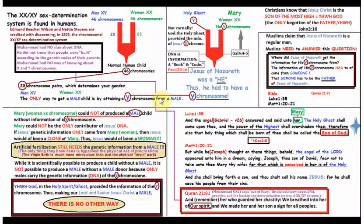Now, Mary was a woman. She has XX chromosomes, and she had no Y chromosome. None. So, Jesus of Nazareth was a he. He was a male. Thus, he had to have a Y chromosome. He had to have the information that is contained in a Y chromosome. Like we said, the only way to get a male child is by attaining the Y chromosome. So, Jesus was clearly a man.